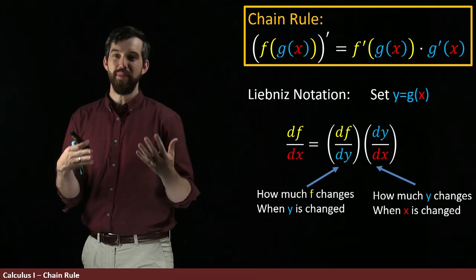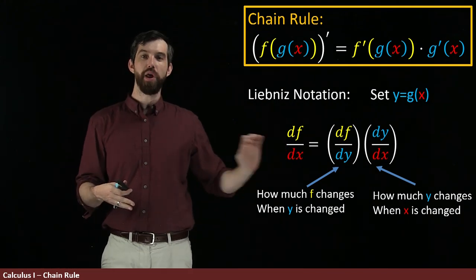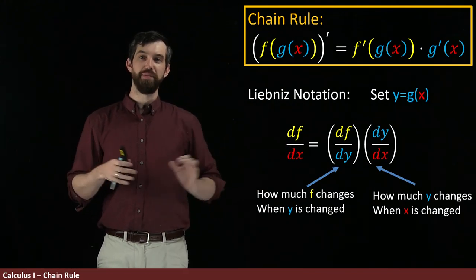And so, I think that it makes it a little bit more transparent why the chain rule is this product of these two things when it's written in Leibniz notation.